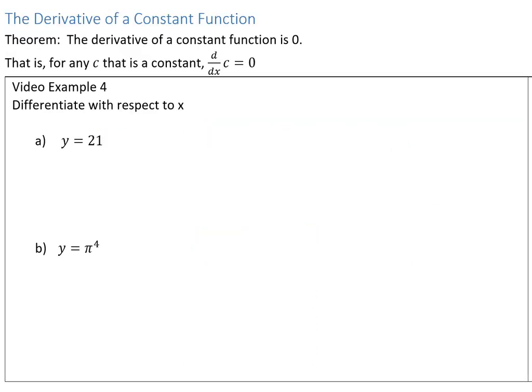We're now looking at the rule about the derivative of a constant function. If you imagine the graph of a constant function, it looks like a flat horizontal line with a slope of 0. So the derivative of a constant is 0. For example, d/dx of 21 is 0. Similarly, if y equals pi to the 4th, there is no x in this equation — it is a constant — so d/dx of pi to the 4th is also 0.